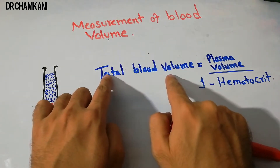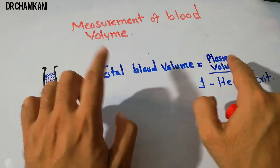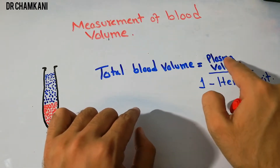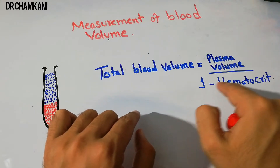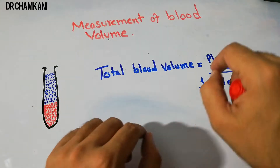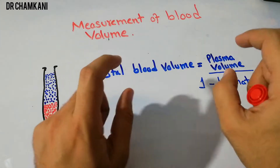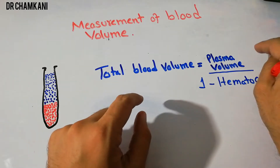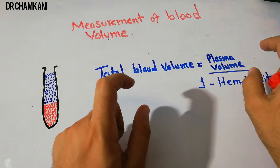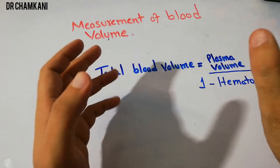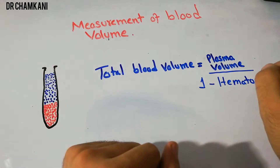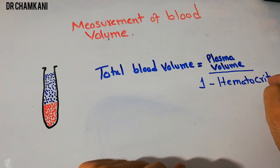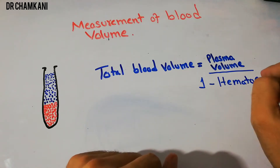The total blood volume is calculated with the help of this equation, which is basically plasma volume divided by one minus hematocrit. To use this equation we need the value of blood plasma — what is the amount of blood plasma — and similarly we need to know the hematocrit.